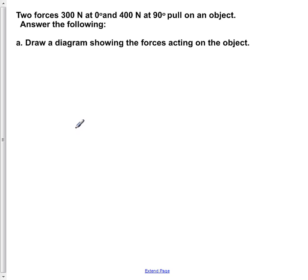Two forces, 300 N at 0 degrees and 400 N at 90 degrees, pull on an object. Answer the following: Part A - Draw a diagram showing the forces acting on the object.